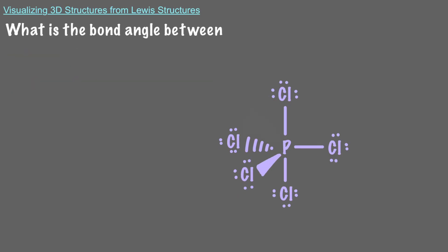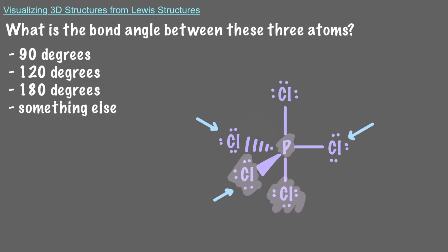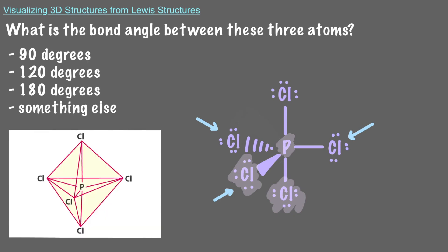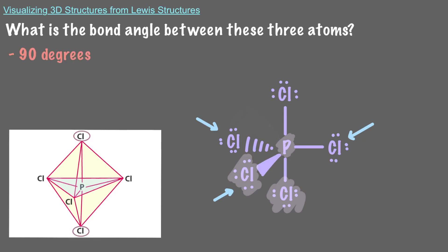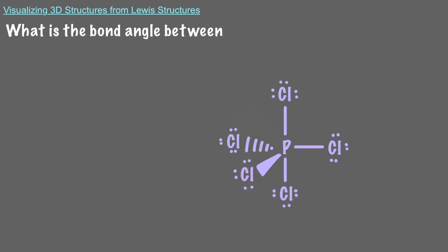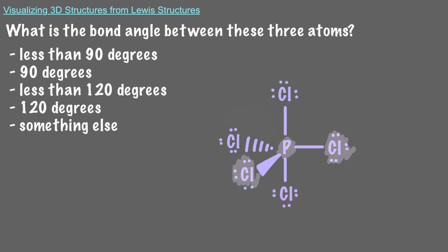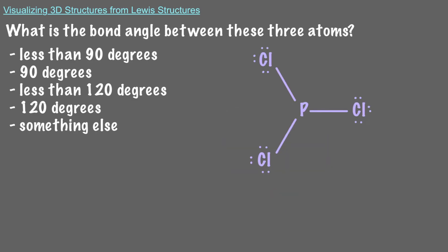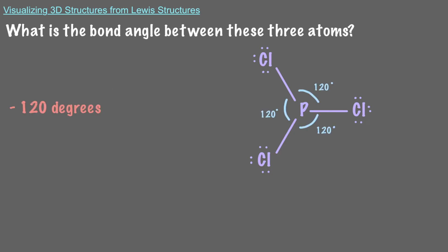What is the bond angle between the axial and equatorial atoms? These 3 chlorines are all on the same plane, which is perpendicular to your screen or piece of paper. So that means there is a 90 degree angle between the axial chlorine and all of the chlorines in the equatorial plane. Remember, the dashes mean that the atom is pointing back into the screen, and the wedge means that the atom is pointing forward out of the screen. If we were to rotate this molecule and look at it from the top down, we see all 3 equatorial chlorines in the same plane at 120 degree angles from each other.